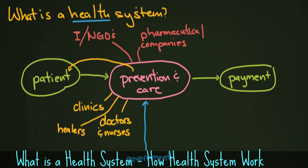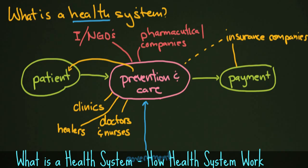You also have insurance companies, which came up at some point and are, in certain countries, a very strong component of the entire system — a very deciding factor. They are sometimes directly related to prevention and care, although I should maybe put that as a dotted line because that's not always the case. They're always involved in payment because that's essentially what they were built to do: pay for these problems. And they are directly related to the patient — their customer. The patient pays the insurance company and the insurance pays for the care, although not completely and entirely.